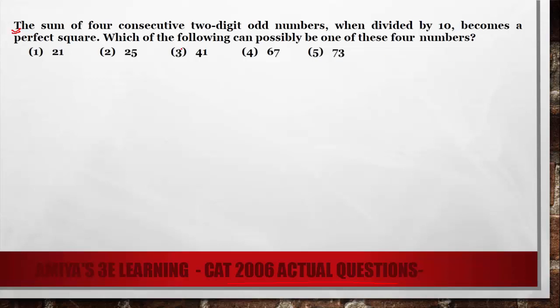I hope you have solved the question. Our answer is option number 3, 41. We have four conditions: four consecutive two-digit odd numbers when divided by 10 becomes a perfect square.